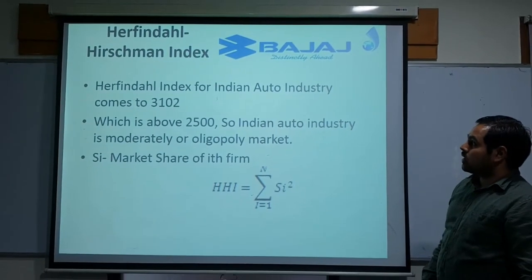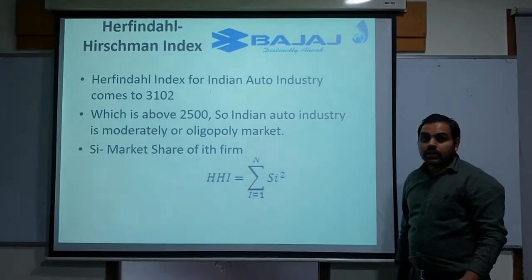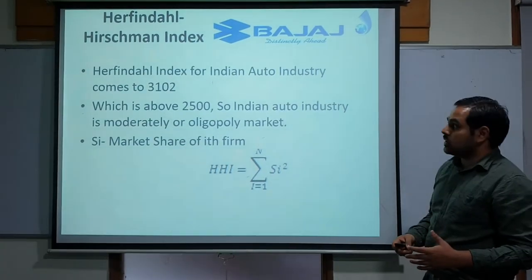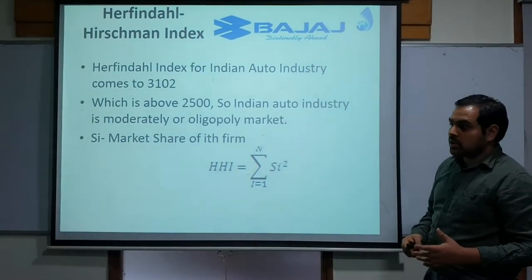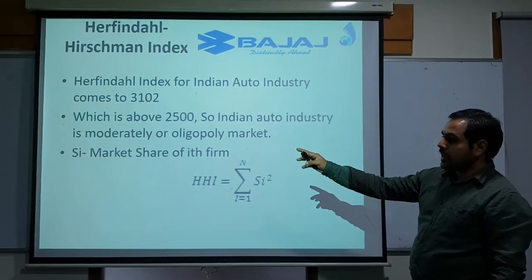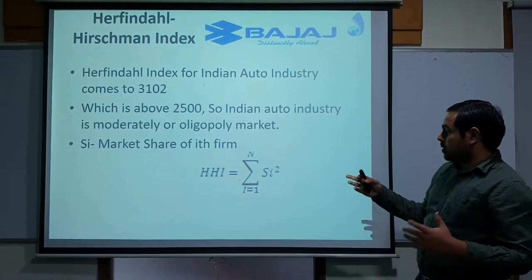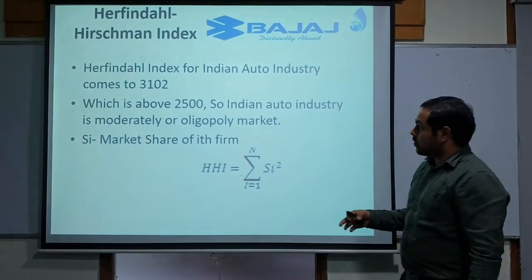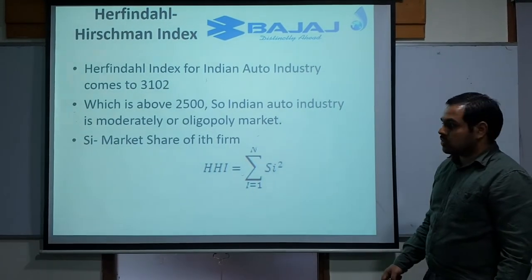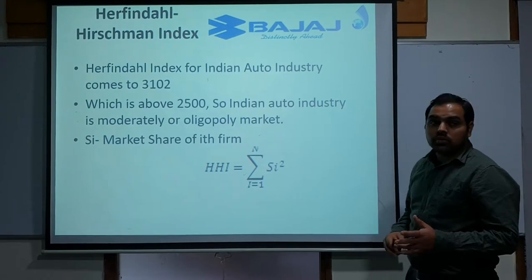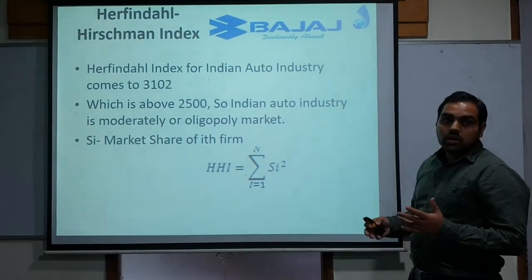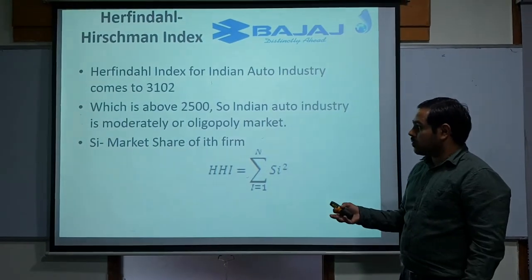The Herfindahl-Hirschman Index explains what type of market this is. As already mentioned, it is an oligopoly, confirmed by this index calculated by the summation of the squares of market shares of each firm in the industry. This comes out to be 3102, which is above 2500, which is the critical limit for any competitive market.